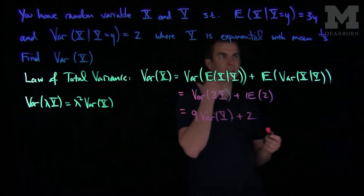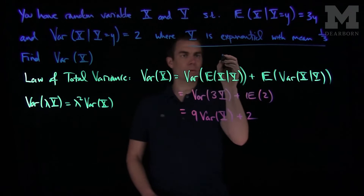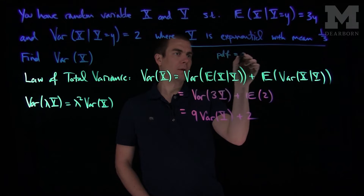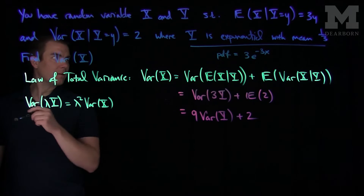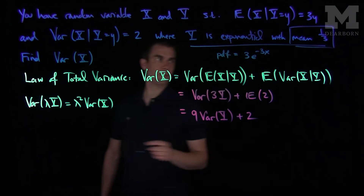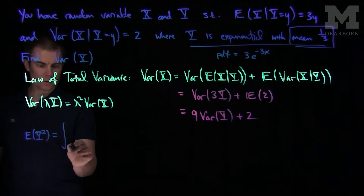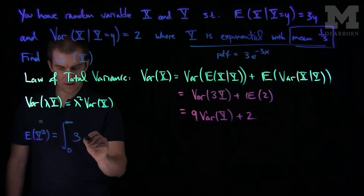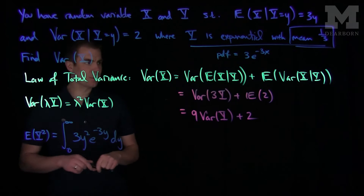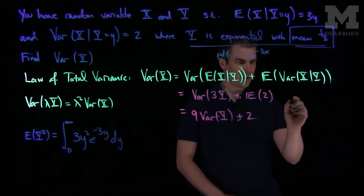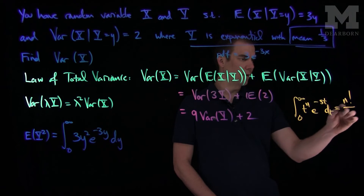Now we need to find the variance of our exponential random variable. We're given y is exponential with mean one-third, which means y has PDF 3e to the negative 3y. So what we do now is find the second moment of this random variable. The second moment is the integral from 0 to infinity of 3y² e to the negative 3y dy. Here we can use our gamma rule: the integral from 0 to infinity of t^n e^(−st) dt equals n factorial over s to the n plus 1.